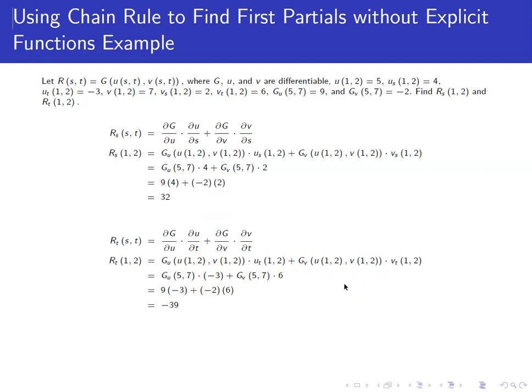The second part is very similar, except that we replace, instead of partial of U with respect to S, we have partial of U with respect to T. And instead of partial of V with respect to S, we have partial of V with respect to T. It's the only difference from part 1 to part 2. We're just changing that other variable that we're differentiating with respect to. The U and V stay the same.